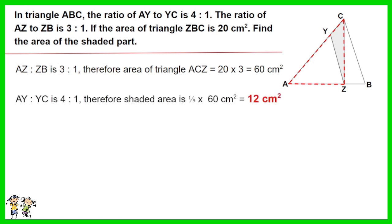The ratio of AY to YC is 4 to 1. Therefore the shaded area is one-fifth of 60. The answer is 12 cm squared.